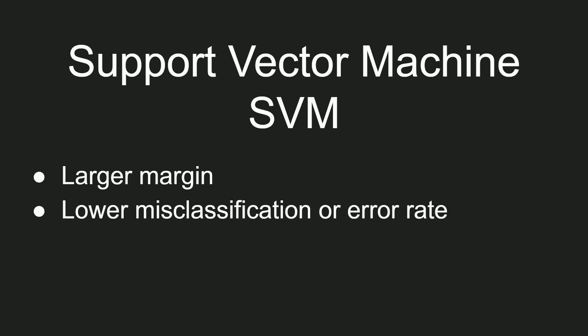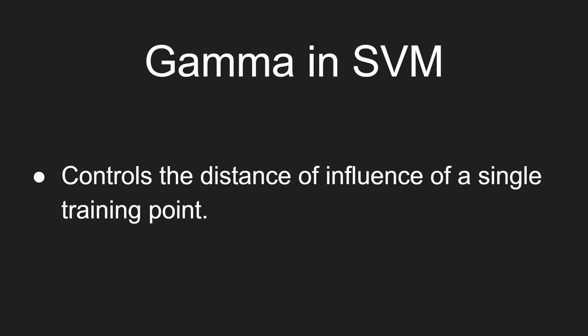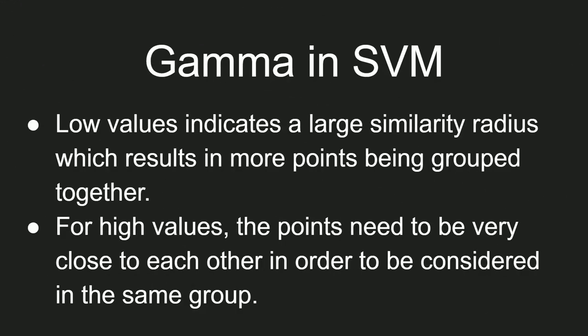The two hyperparameters in SVM I will talk about are gamma and C. The gamma parameter comes in handy when you are using kernels like RBF or poly. It does not have any role to play when your kernel is linear. Gamma essentially controls the distance of influence of a single training point. Low values of gamma indicate that a large similarity radius is required, which results in more points being grouped together. For higher values of gamma, the points need to be very close to each other in order to be considered the same group.